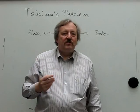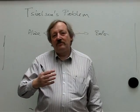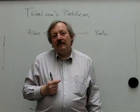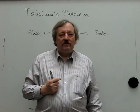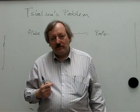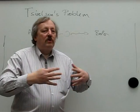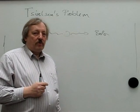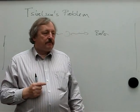For the CHSH inequality, the maximal value you can get is twice the square root of two. But we look at more general problems like that.